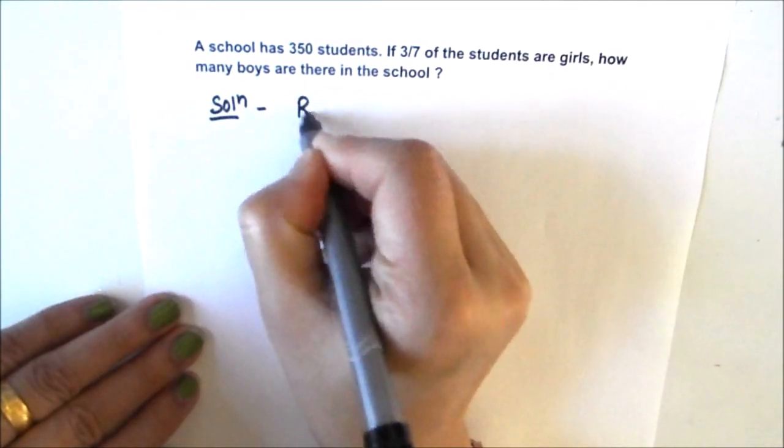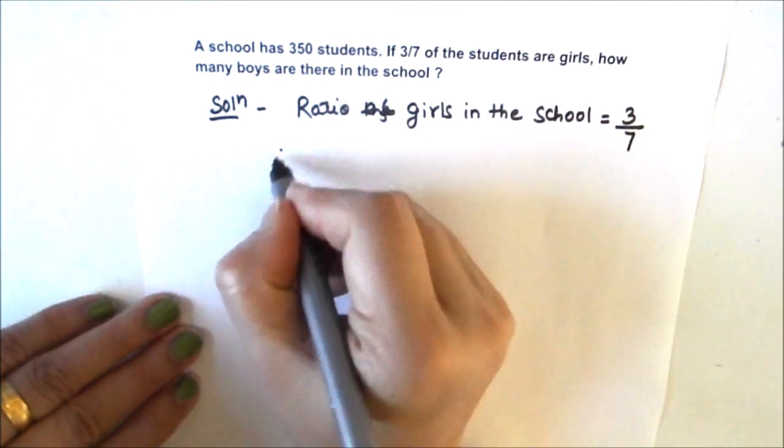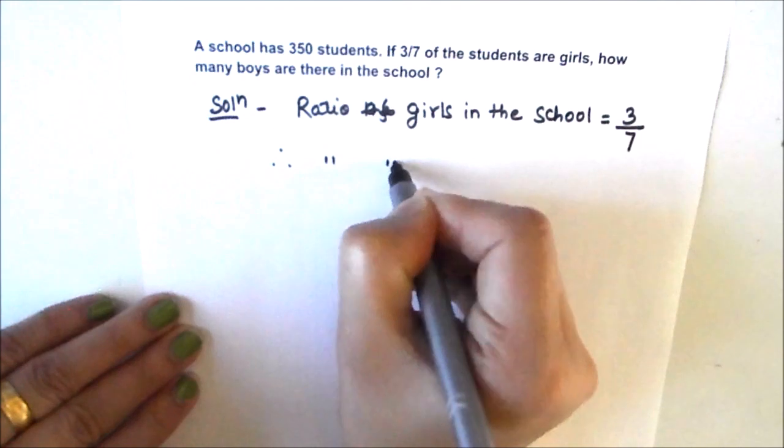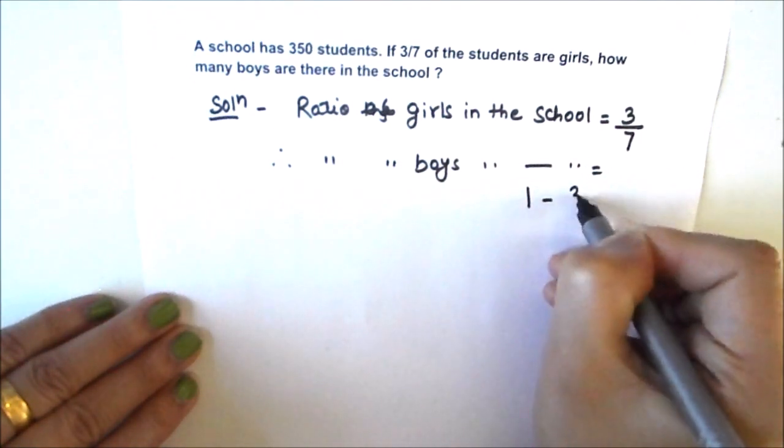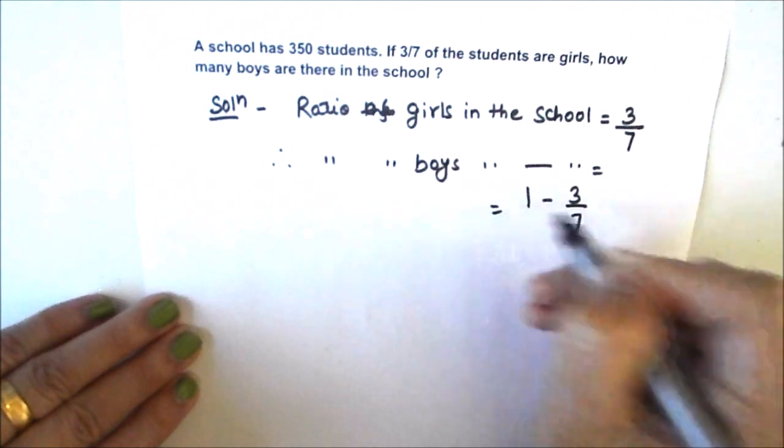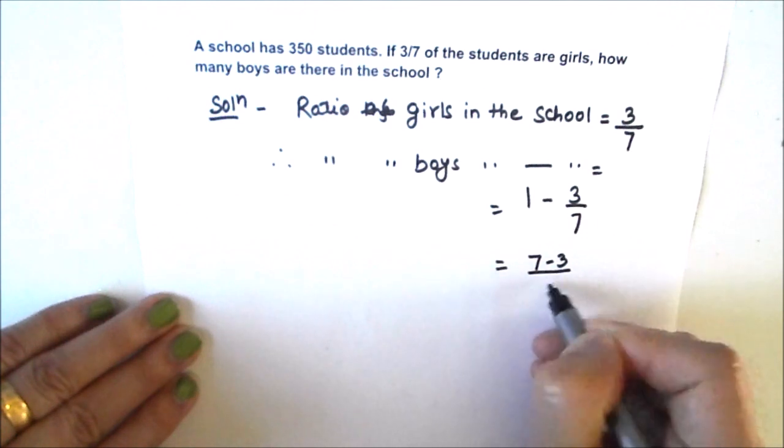Ratio of girls in the school is given as 3 upon 7 or 3 by 7. Therefore, ratio of boys will be 1 minus 3 upon 7.